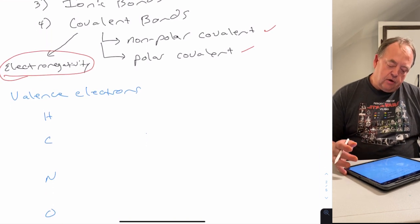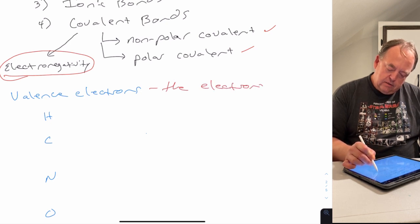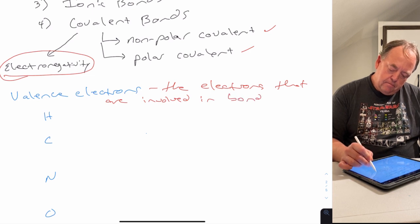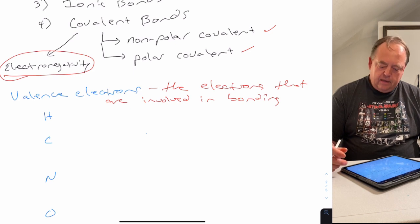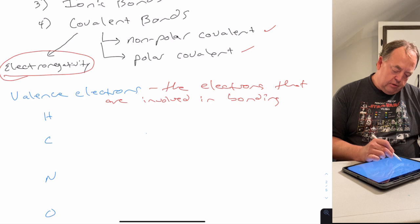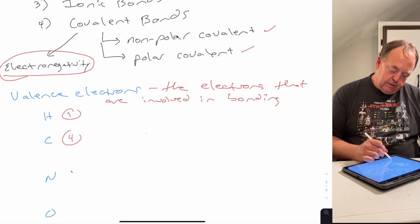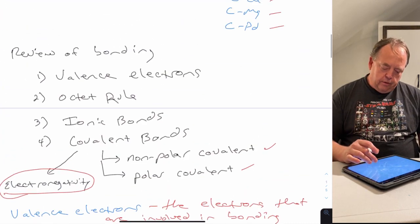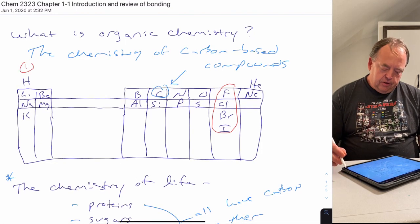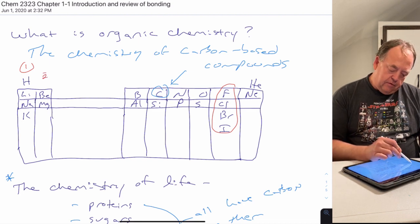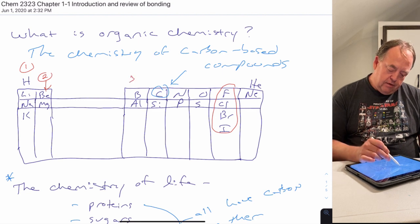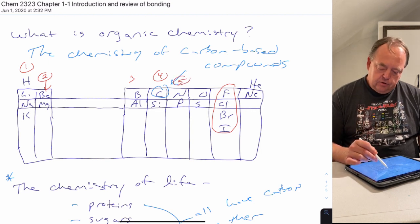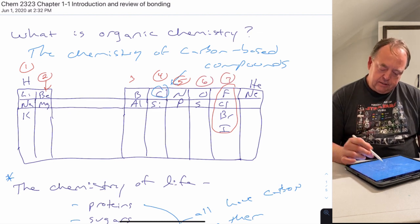Valence electrons are the electrons involved in bonding — these are the electrons used to make ionic or covalent bonds. Hydrogen has one valence electron, carbon has four, nitrogen five, oxygen six, and fluorine seven. The easiest way to know this is to look at the periodic table: group one elements have one valence electron, group two have two, and so on. Carbon is in group four so it has four, nitrogen and phosphorus are in group five so they have five, oxygen and sulfur have six, and the halogens have seven.